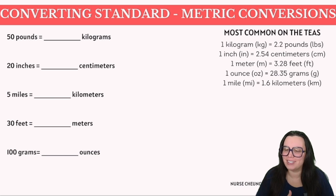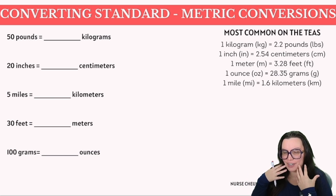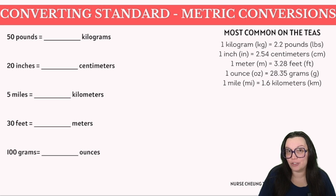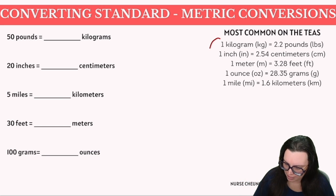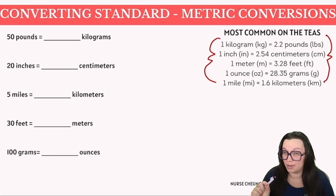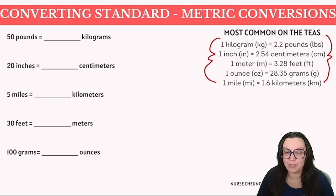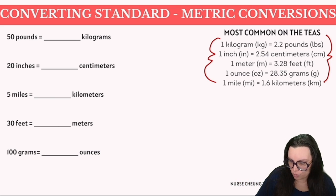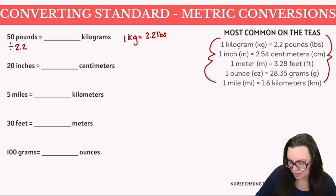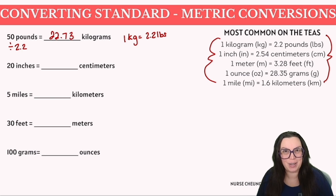Now we need to convert between the two systems — one of the most commonly missed question types on the TEAS. A cheat sheet is provided on screen. First: 50 pounds to kilograms. One kilogram equals 2.2 pounds, so we divide 50 by 2.2, giving approximately 22.73 kilograms. This conversion is crucial in healthcare.